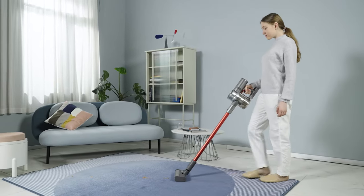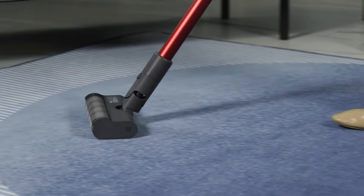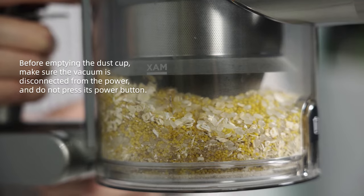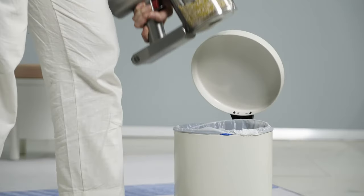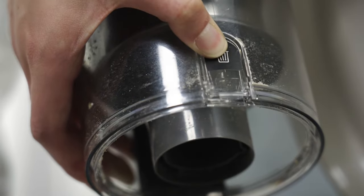The vacuum cleaner's cleaning ability will be reduced if the dust compartment is filled to the max mark. To regain performance, empty the dust cup in a timely manner. Press the dust compartment bottom cover release button, then empty the contents.